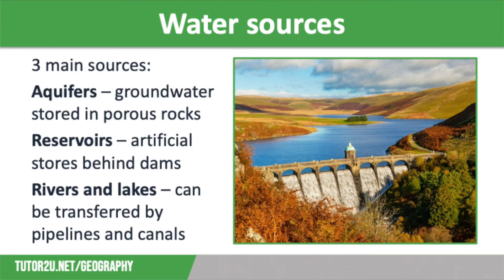Secondly, we have reservoirs. These are artificial lakes that form when a dam has been constructed and the valley behind it flooded. They are used to store water which is then transferred to settlements nearby for domestic, agricultural and industrial use. On screen we have a photo of the Craig Goch Dam and Reservoir in the Eland Valley in mid-Wales, which supplies water directly to cities such as Manchester and Birmingham. Finally, we have rivers and lakes. Water can be transferred from these using a network of pipelines and canals to where it is needed, or it can be extracted directly by local people for domestic use or by farmers for irrigation.